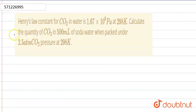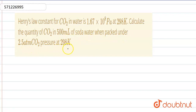Hello, the question is: Henry's law constant for carbon dioxide in water is 1.67 × 10⁸ pascal at 298 Kelvin. Calculate the quantity of carbon dioxide in 500 ml of soda water when packed under 2.4 atmosphere carbon dioxide pressure at 298 Kelvin.